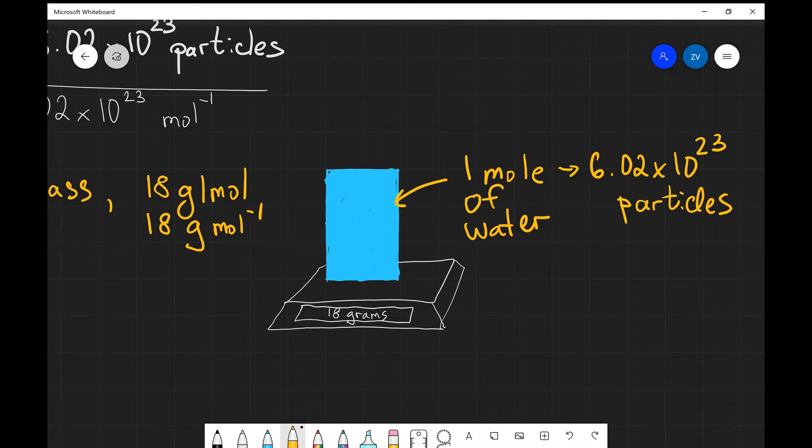Notice that we have a direct link between the mass of the water, which in this case is 18 grams, and the number of particles that the substance contains based on its molar mass. What that is telling us is that if we can fill a glass of water, you will know exactly how many particles there are there, and this is absolutely fascinating.